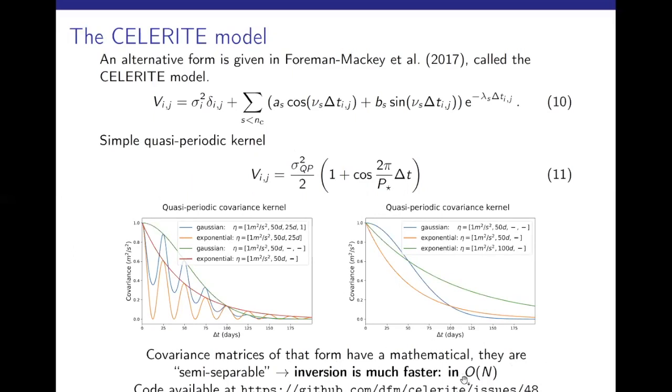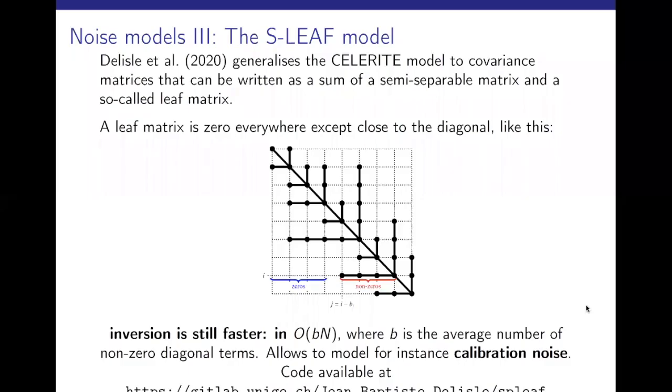Basically the difference is that this kernel decreases, has a covariance that decreases faster at the beginning, but has longer tails. And if you forget about the quasi-periodic, the periodic component of the quasi-periodic kernel, you see that it's the same behavior. The Gaussian distribution takes longer to decrease, has an increased correlation at the beginning, but then the exponential distribution has remaining correlation for a longer time. And the advantage of using this form is that the covariance matrix has a form which is called semi-separable.